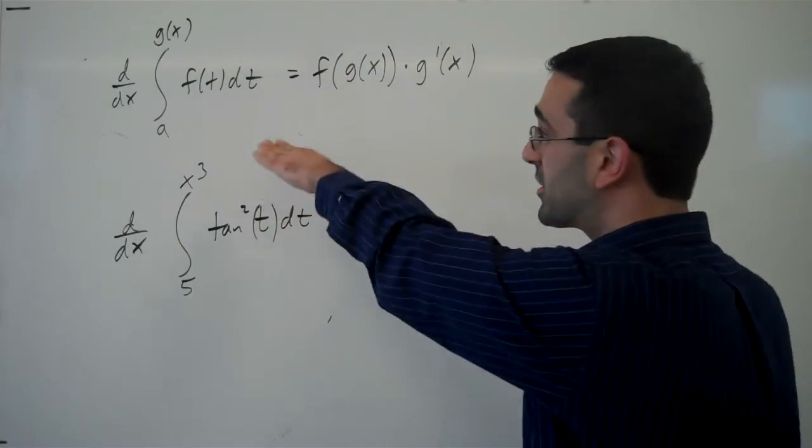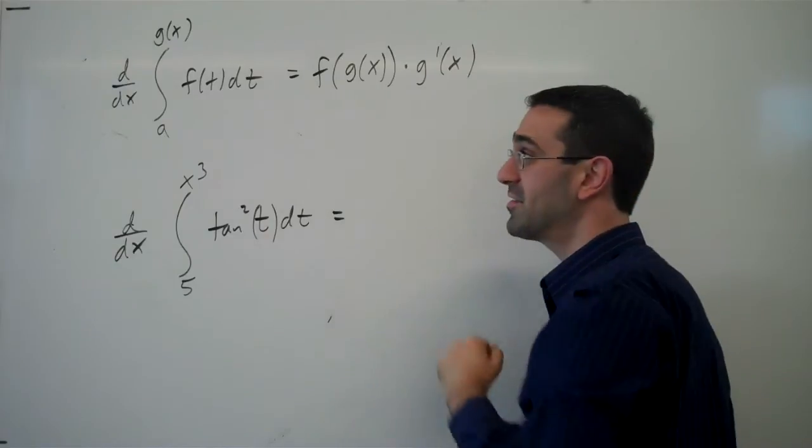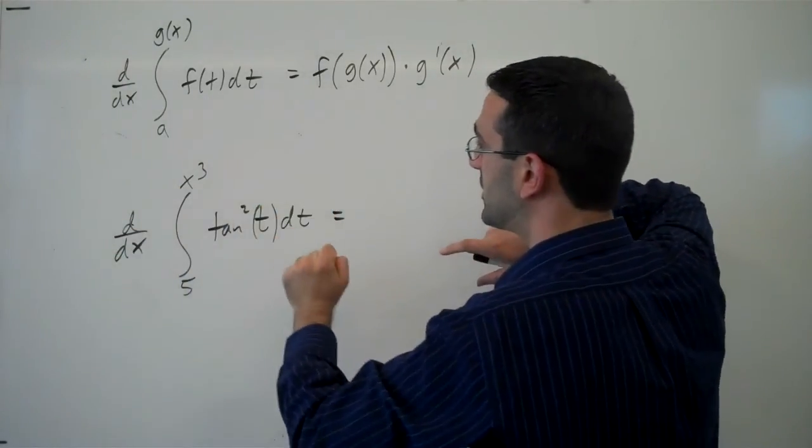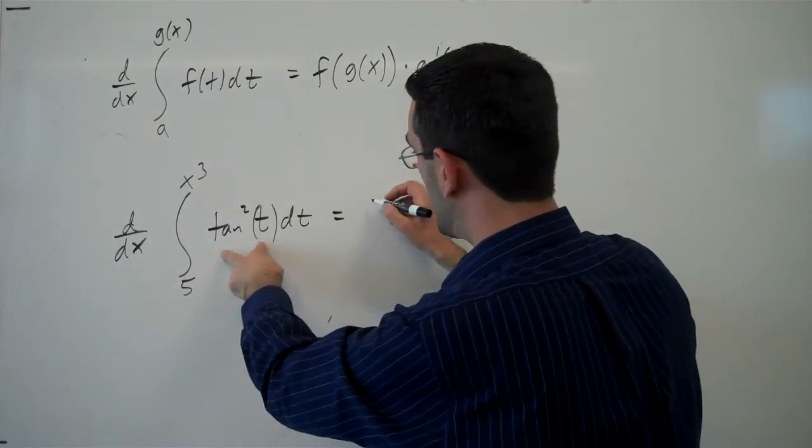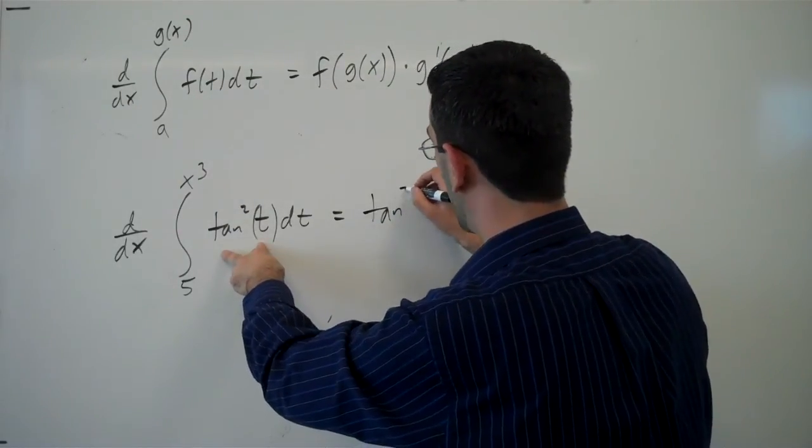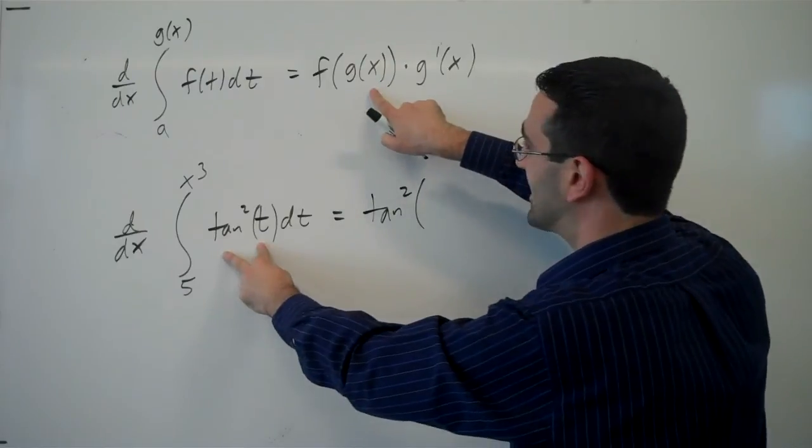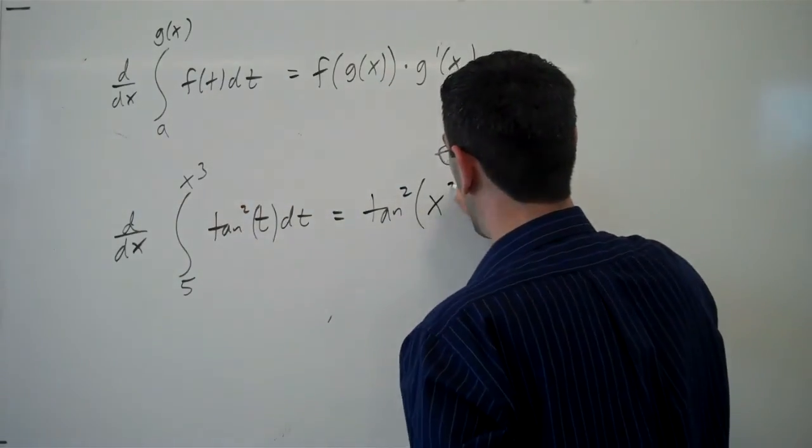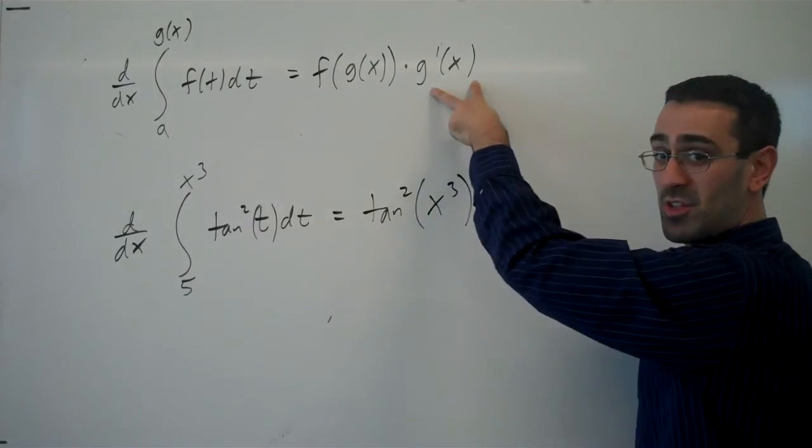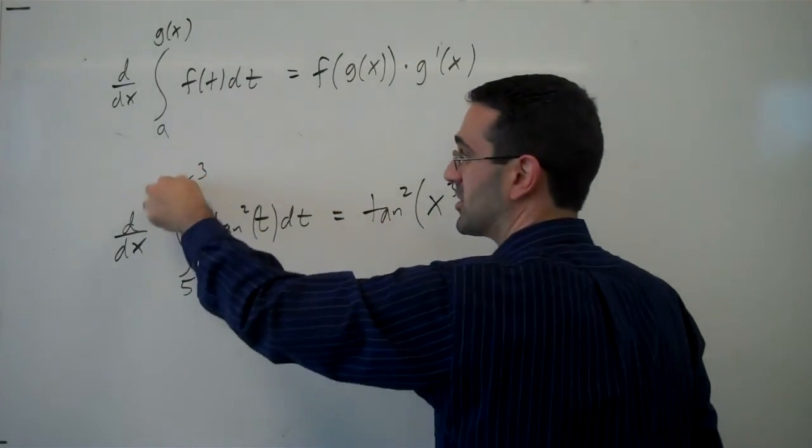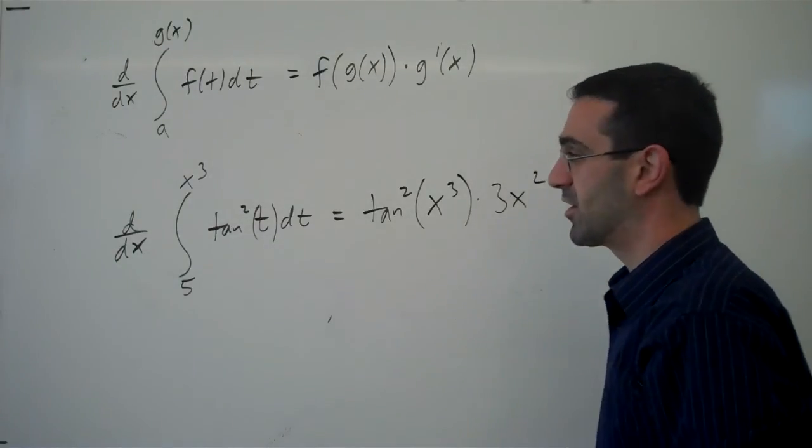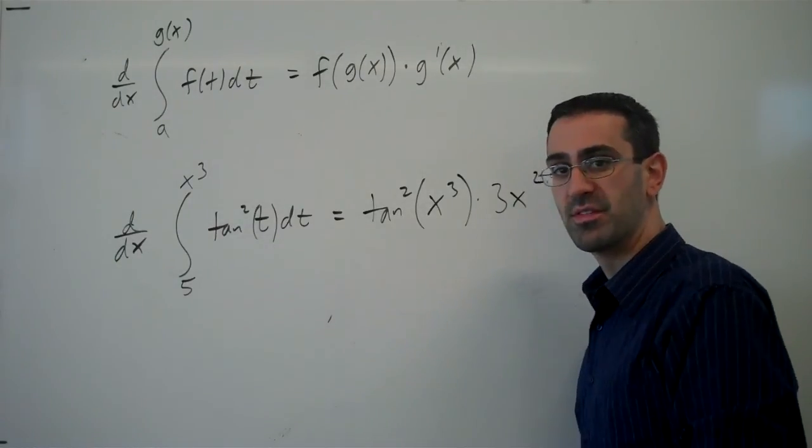The fundamental theorem, the version that we just derived, said the derivative will undo the integral, getting me back to the original function of tangent squared, evaluated not at x, but at this function, so at x cubed, times the derivative of this function here. So times a chain rule, so times 3x squared. And there's the derivative of the integral.